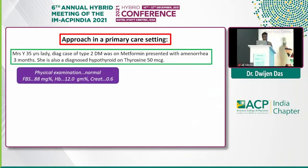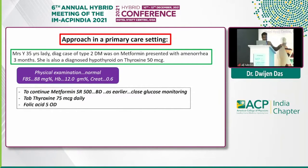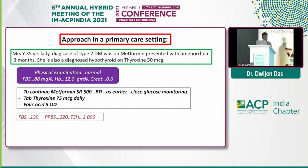Another case: a 35-year-old lady diagnosed with type 2 diabetes mellitus was on metformin 500 mg twice daily and presented with amenorrhea for three months. She was also a diagnosed case of hypothyroidism getting thyroxine 50 micrograms. On examination, findings were absolutely fine with sugar and creatinine also normal. We continued with metformin as the patient was maintaining good sugar levels. But for thyroxine, we needed to increase the dose immediately once the patient conceived — we have to increase the dose by 30 to 50 percent. So we increased it to 75 micrograms and added folic acid. But on a repeat sugar analysis after four weeks, there was a high amount of sugar, though the TSH was absolutely on target, so we started with insulin.